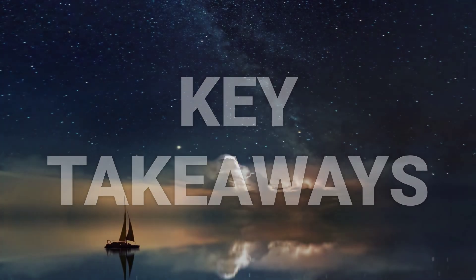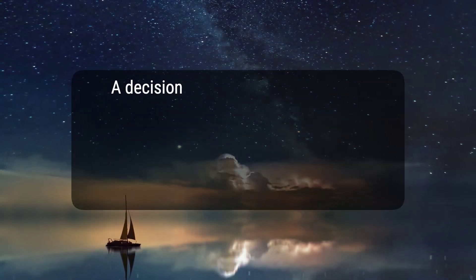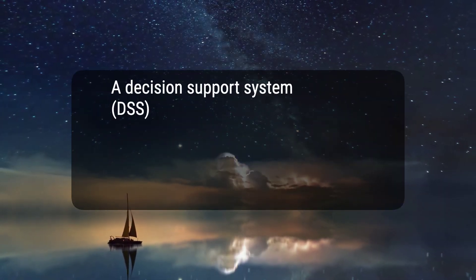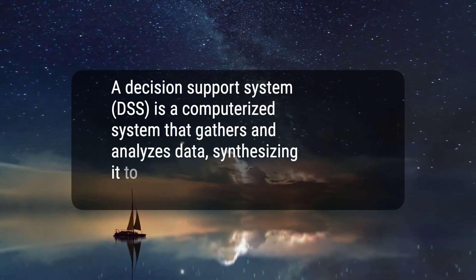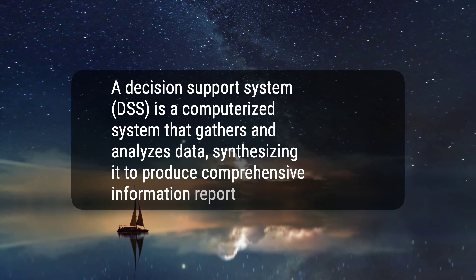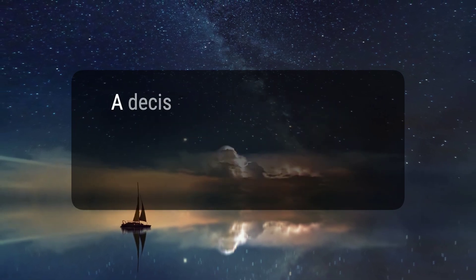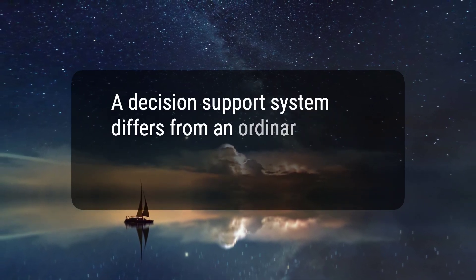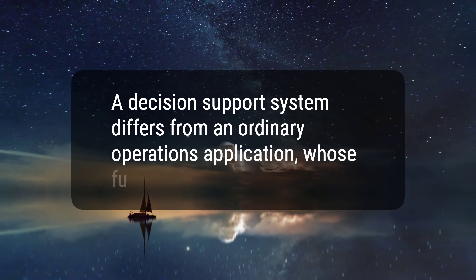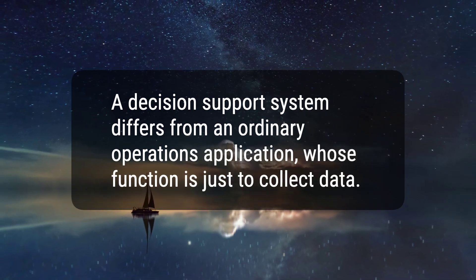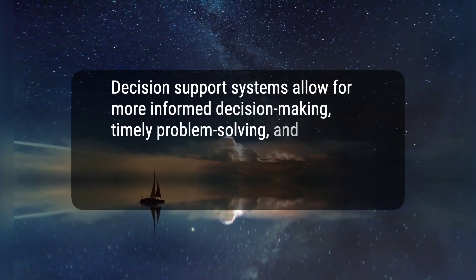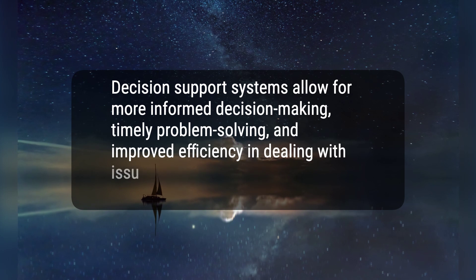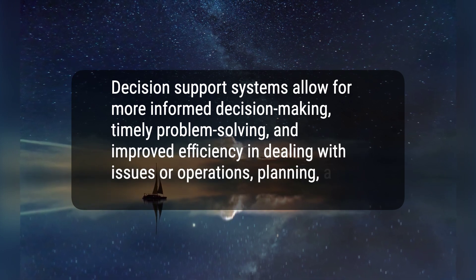Here are three key takeaways. 1. A decision support system, DSS, is a computerized system that gathers and analyzes data, synthesizing it to produce comprehensive information reports. 2. A decision support system differs from an ordinary operations application, whose function is just to collect data. 3. Decision support systems allow for more informed decision-making, timely problem-solving, and improved efficiency in dealing with issues or operations, planning, and even management.